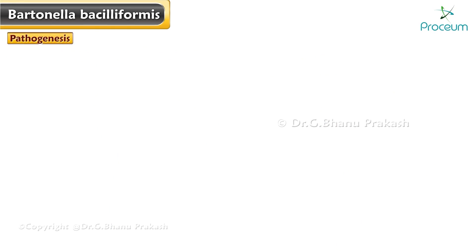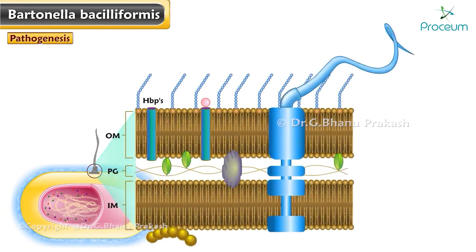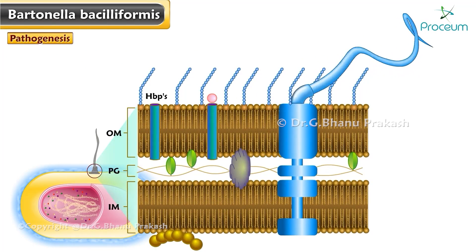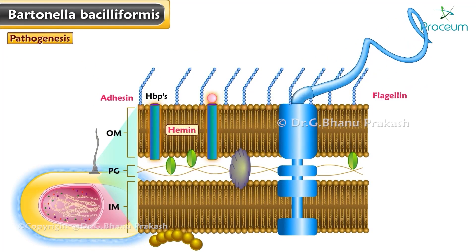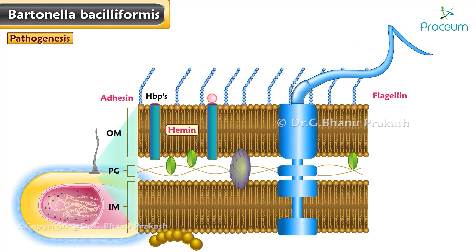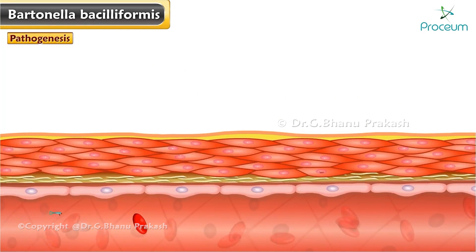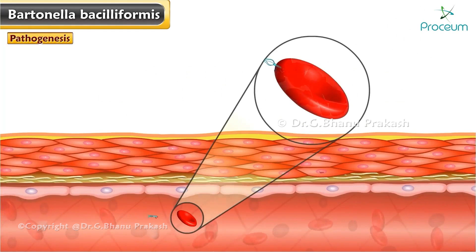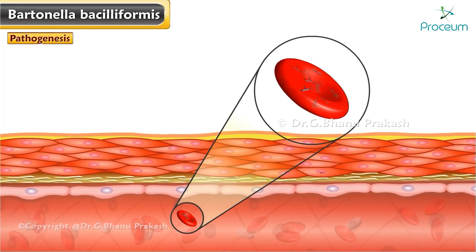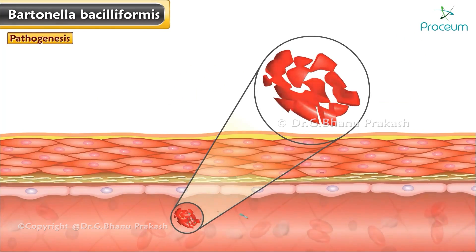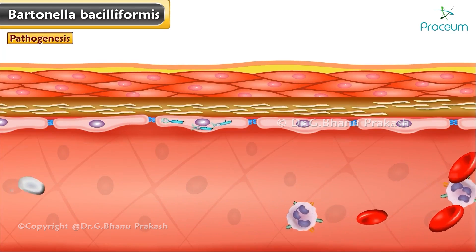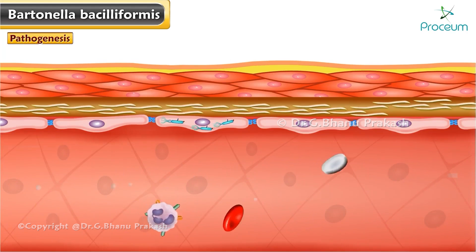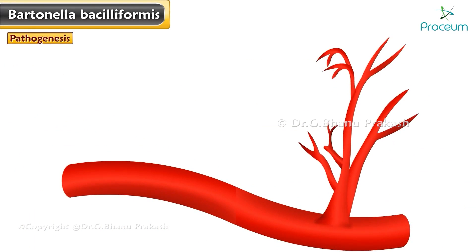Pathogenesis: Bacilliformis produces virulence factors, including adhesin, flagellin, and hemin. These virulence factors facilitate the organism's invasion of erythrocytes, causing intraerythrocytic replication and hemolysis, and replication within endothelial cells, promoting proliferation and angiogenesis.